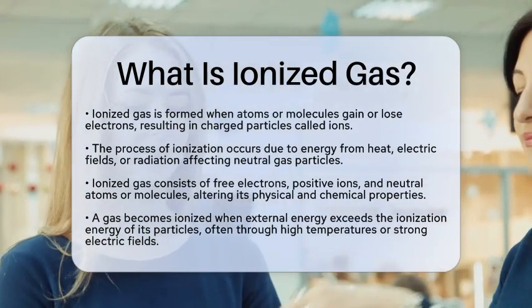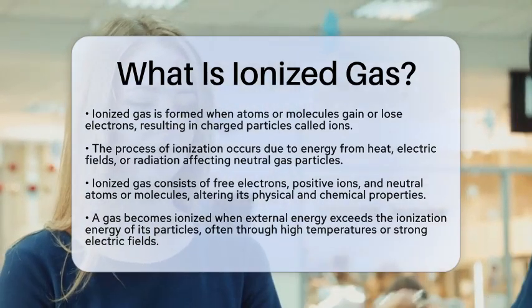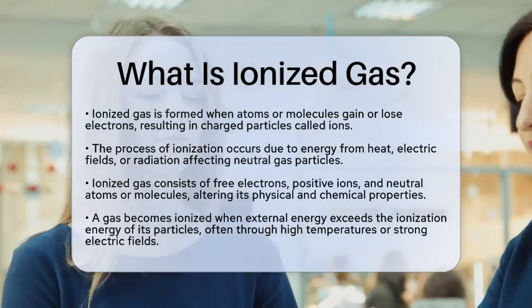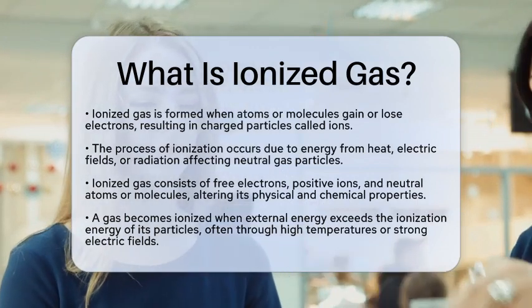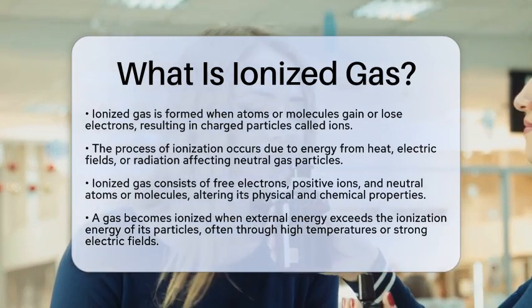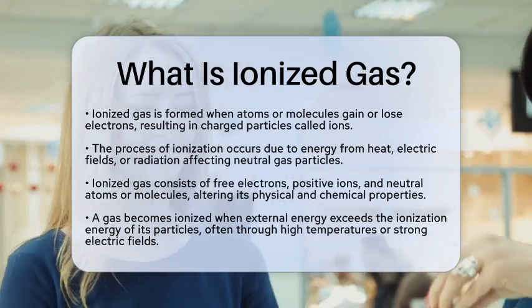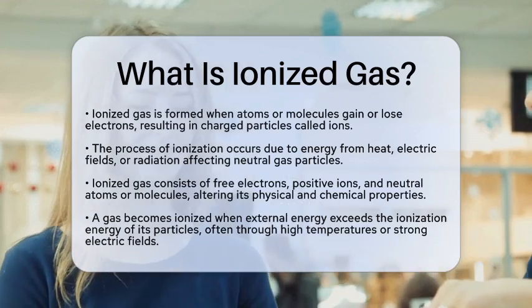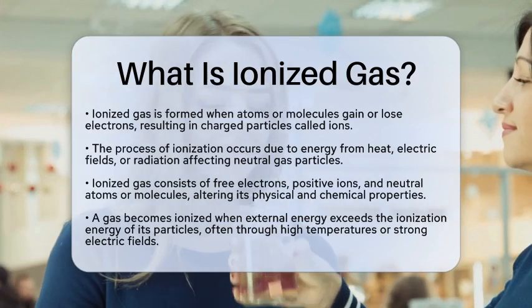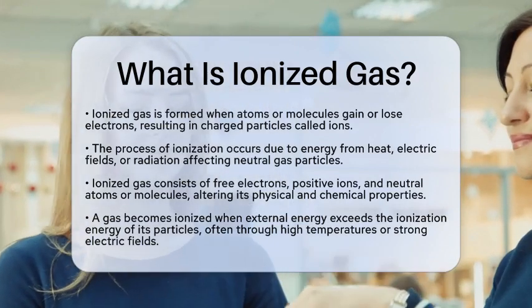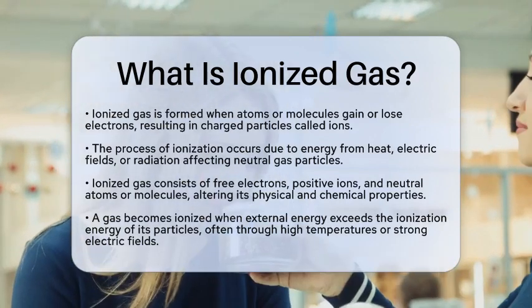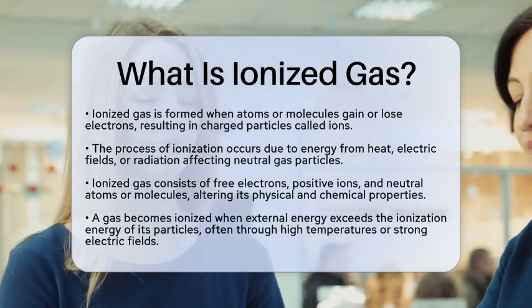Ionization occurs when energy from heat, electric fields, or radiation knocks electrons away from neutral gas particles. When a gas becomes ionized, it transforms into a mixture of free electrons, positive ions, and neutral atoms or molecules. This change significantly alters the gas's physical and chemical properties.